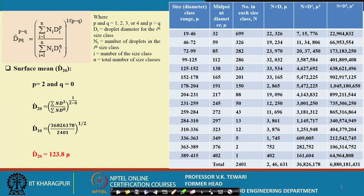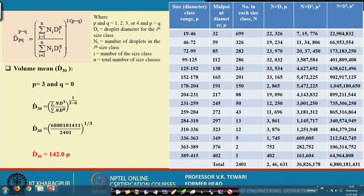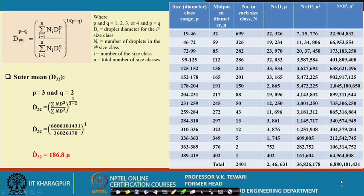The next is surface mean, d_20, where p is 2 and q is 0. Using that in the equation, with n d to the power 0 being equal to 1, you automatically get the value of d_20. This is the actual value of d_20. Similarly, when you want to get the volume mean d_30, you put in p equals 3, q equals 0 to get that value.